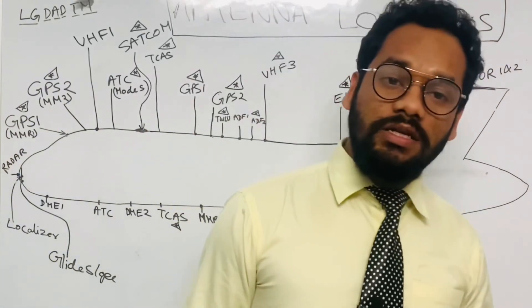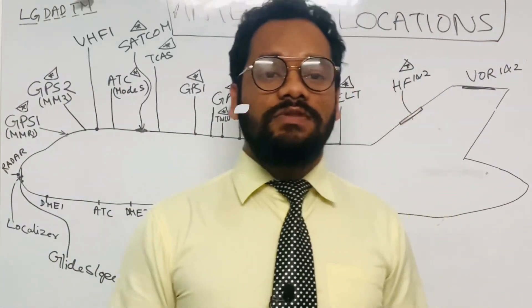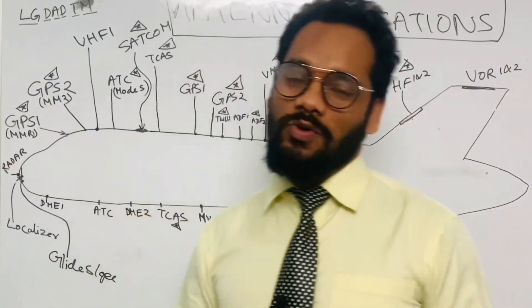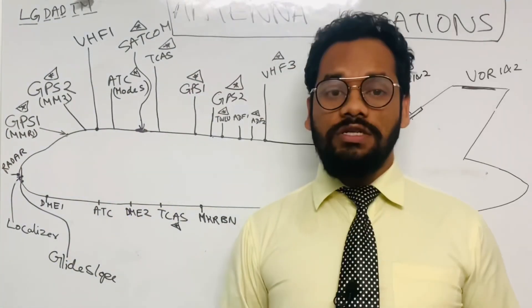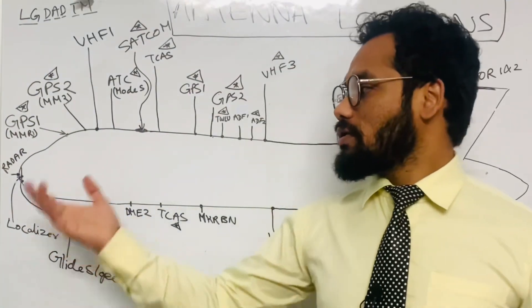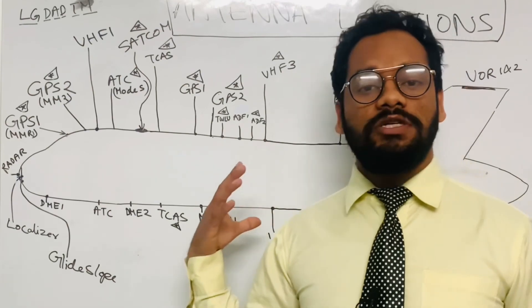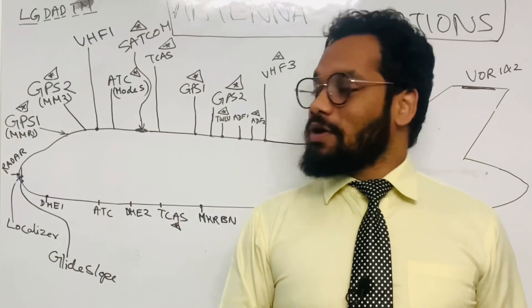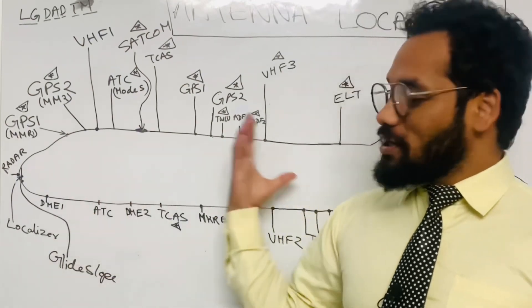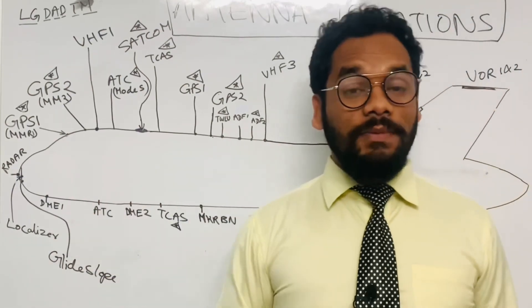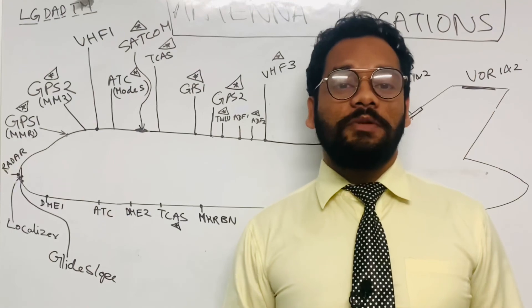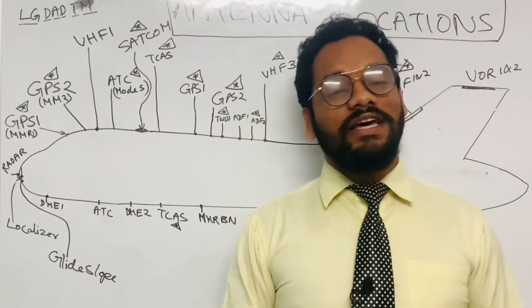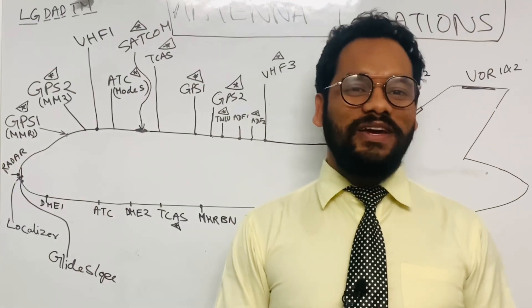The radio altimeter antennas receive signals in the UHF band. That covers all the antenna locations in the Airbus A320 aircraft. I hope you enjoyed learning this topic — I'll come up with a new topic in my next session. Till then, enjoy learning, and thank you.